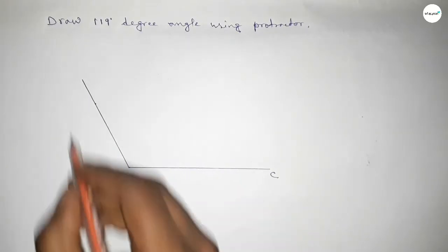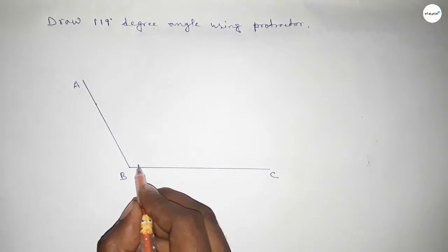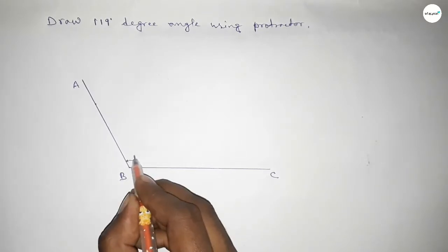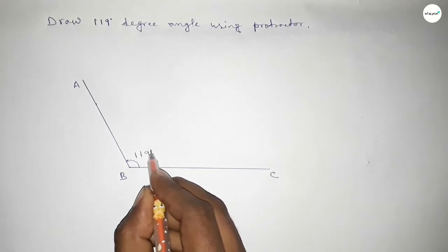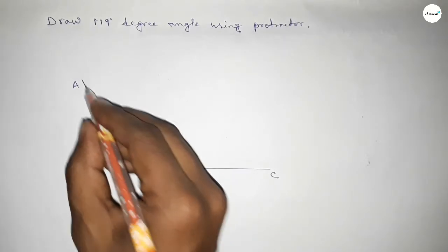Therefore, angle ABC equal to 119 degree angle. That's all.